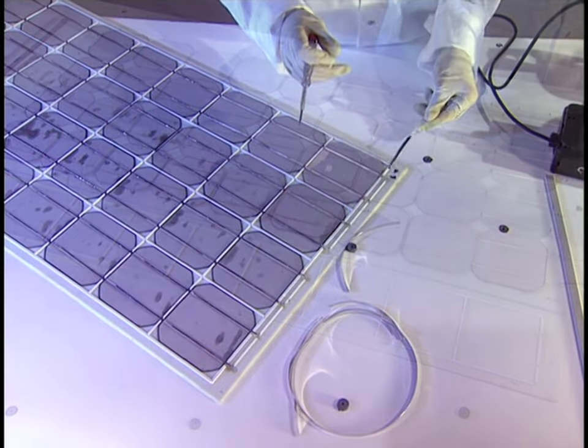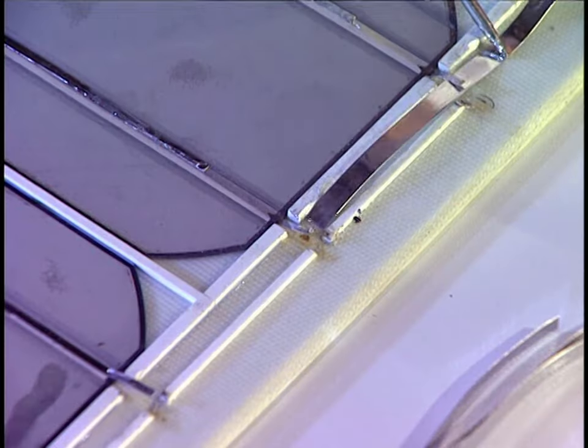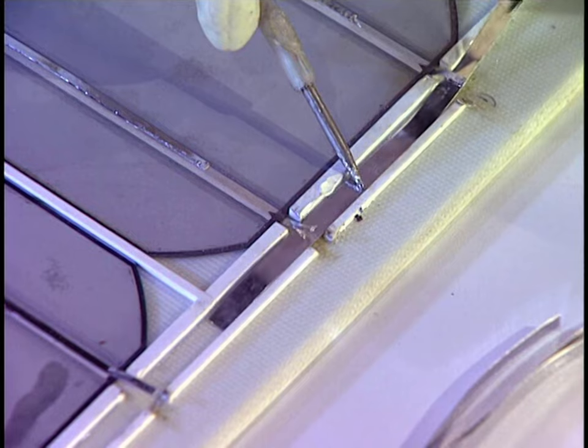The modules are placed into position. Then this metallic strip is inserted. It is a conductor that will link the four groups of nine modules.